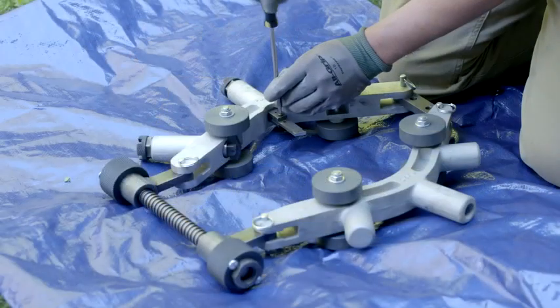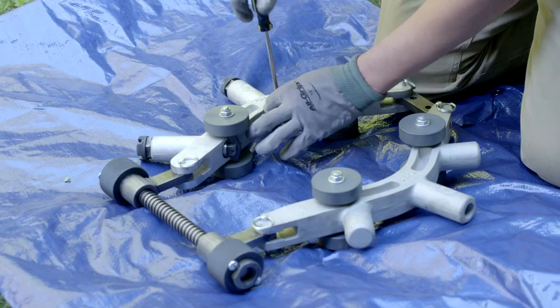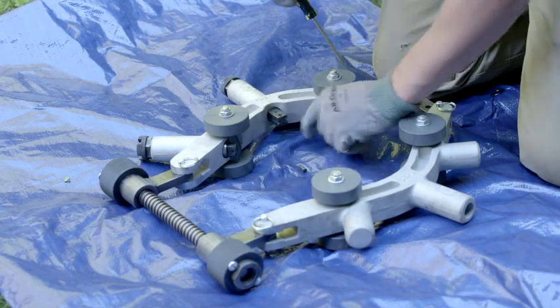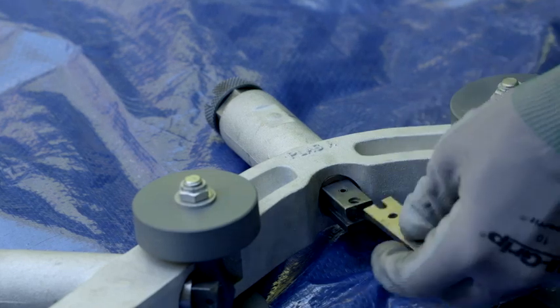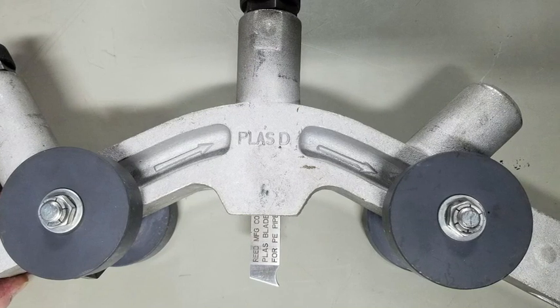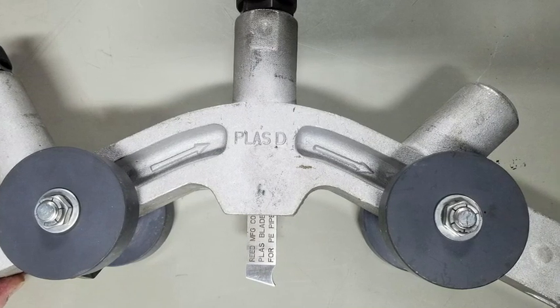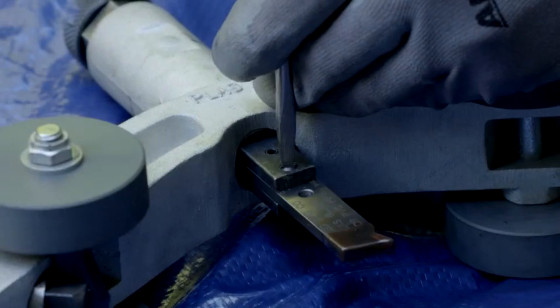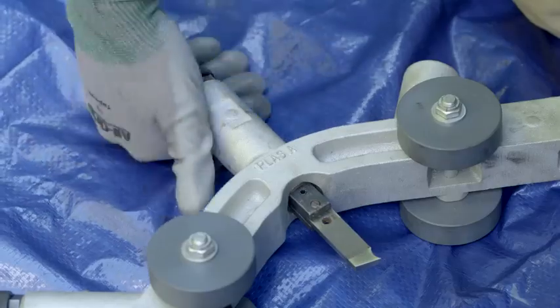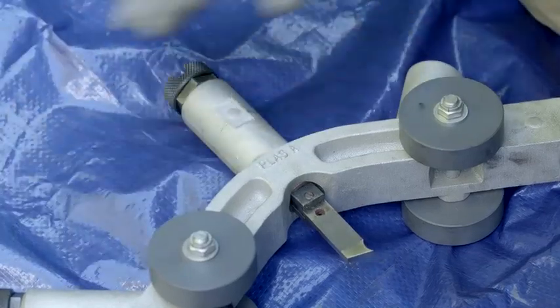To remove the cutting blade from section A or section D, first remove the screw, then take the old blade out and insert the new blade. Make sure the blade is inserted with a cutting edge facing the same direction as the arrows above it. Finally, replace the screw. Back the blade off once it is installed.